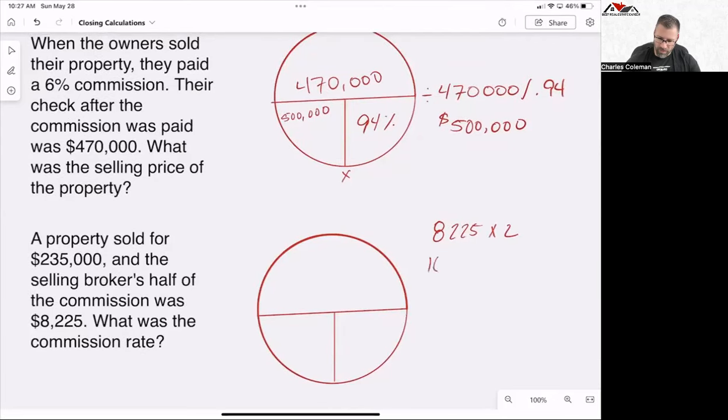And that's going to give us $16,450. So $16,450 is both commissions, right? So that's the $8,225 for the buy side, $8,225 for the sell side. Now, what we're going to do is we are going to divide that